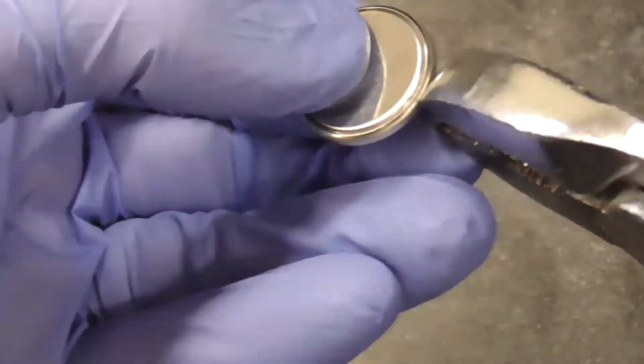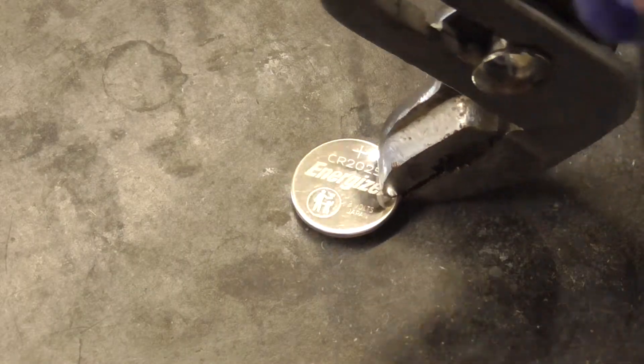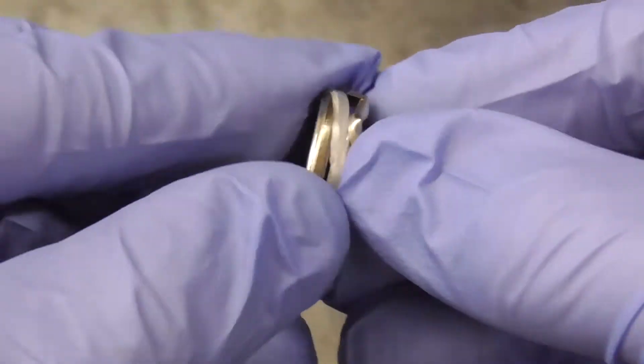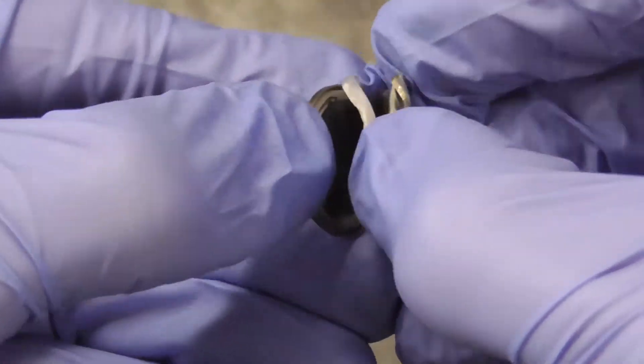I'm going to use a pair of pliers to try to pry open the battery. As you can see it takes quite a bit of work. I have to do a lot of bending of the battery. But as you can see with some patience, I get it open.